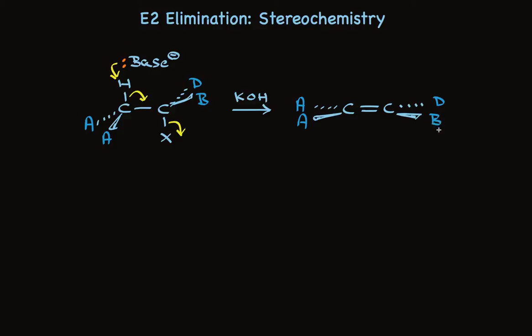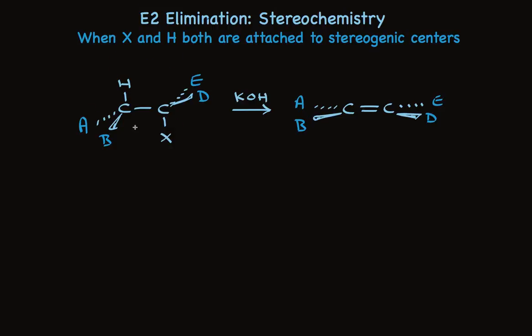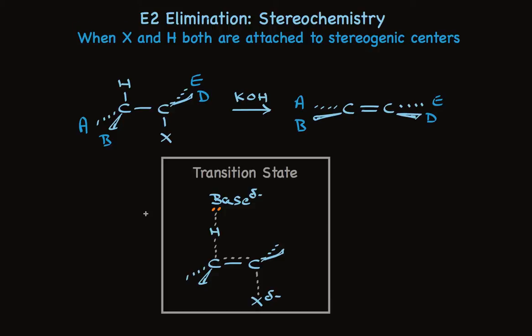But take a look at the case when both of these carbons involved in elimination are stereogenic centers. Each of these carbons has four different things attached to it. There's only one stereoisomer represented by this structure. And to have elimination occur, the hydrogen and the halide must be in the same plane in the anti-arrangement as I've drawn it here.